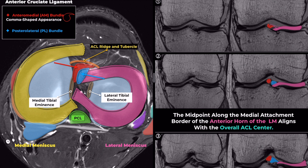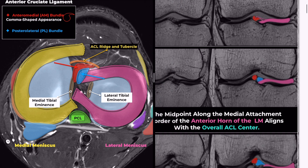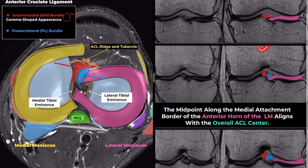In the anterior coronal image, the anterior horn of the lateral meniscus and the anteromedial bundle are visible. There is a fibrous connection between the anteromedial bundle and the anterior horn of the lateral meniscus. A slightly posterior coronal image shows the posterior aspect of the anterior horn aligning with the center of the posterolateral bundle.